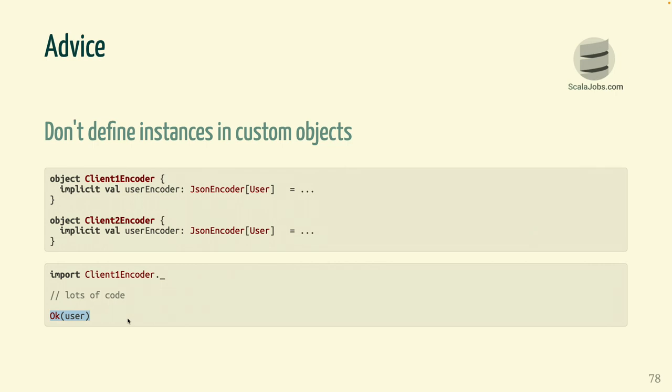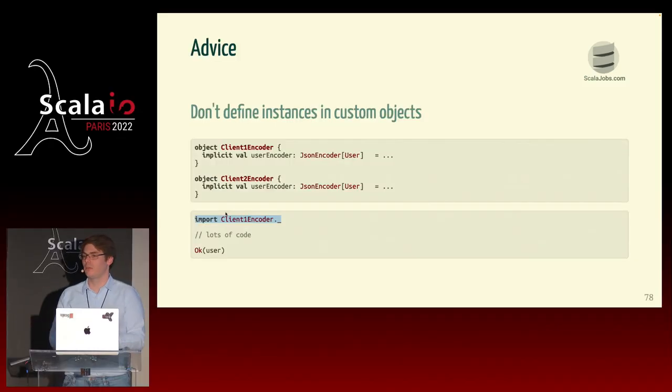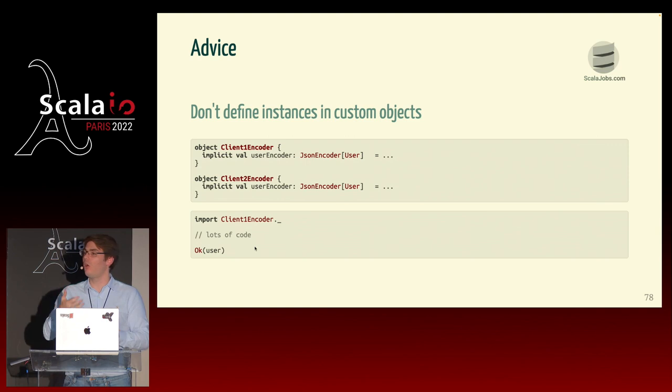A couple of pieces of advice for type classes. First, I argue that you should avoid defining your implicits in custom objects. If you have one way to encode your user for one client and another way for another client, the behavior of OK(user) depends on your imports — and we generally don't read imports carefully. There can be lots of code between the import and the usage, making it hard to know what happens when you read the code. It's much better, if you can, to define implicits in the companion object of your types.